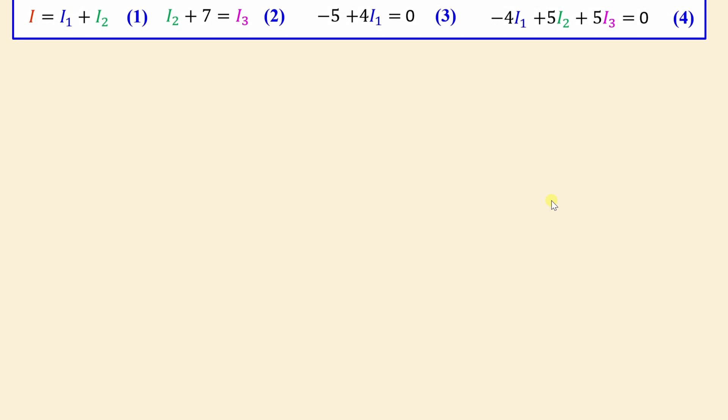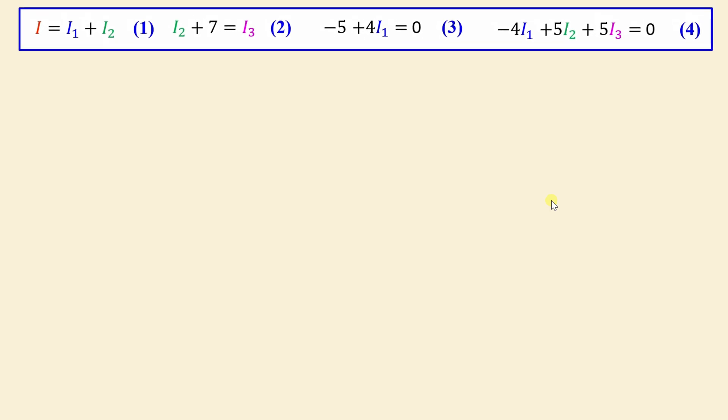By applying KCL and KVL, we found four equations. Now, the only thing we need to do is to solve the equations in order to find the current I, I1, I2 and I3.